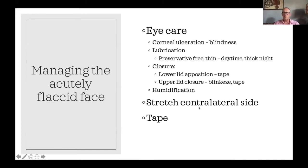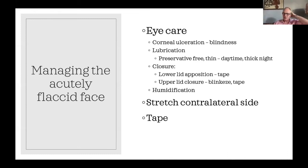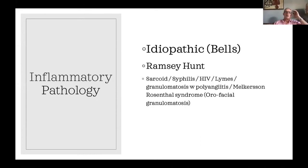With an acutely flaccid face the tendency will be for muscles around the mouth to contract on the good side, because they're also not being pulled to length — so stretching the contralateral side is what you do acutely. Sometimes people use tape to support the angle of the mouth if they're dribbling. There is a charity, Facial Palsy UK, which has very good instructional videos including someone managing the acutely flaccid face — 'floppy face' they call it on the website.